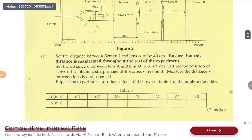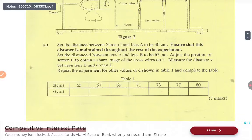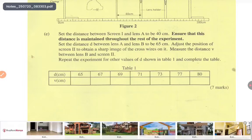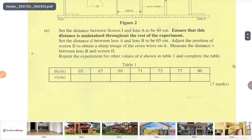Set the distance between screen one and lens A to be 40 centimeters, and ensure that this distance is maintained throughout the rest of the experiment. Repeat the experiment for the other values of D shown in the table. When the distance is 40, then 65, you repeat the distances and fill the table. Seven marks. Don't write centimeters inside the table, just write the number.